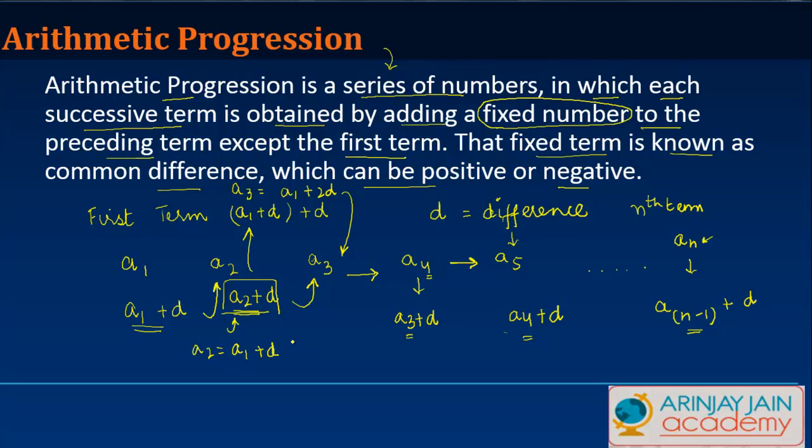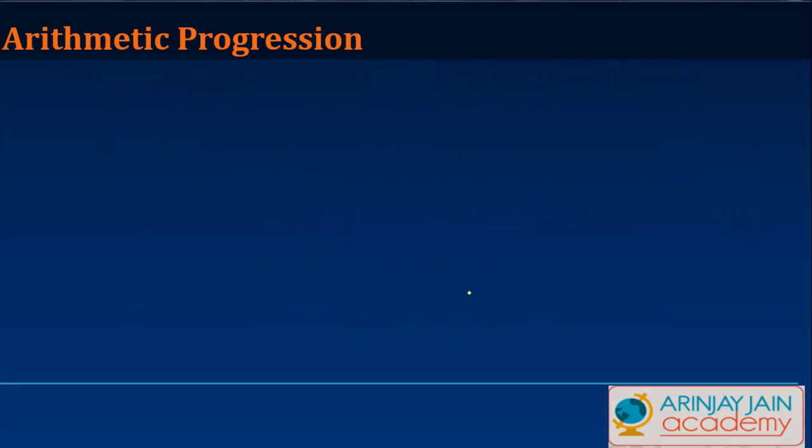This difference can be positive or negative. It need not necessarily be positive at all times. Let's talk about a live example. If I give you a series of numbers 10, 15, 20, 25, 30, and ask you whether this is an arithmetic progression, how do you do that?